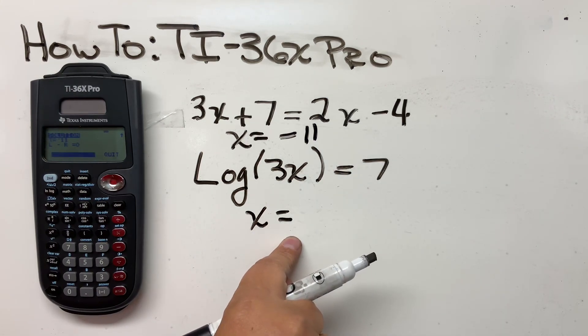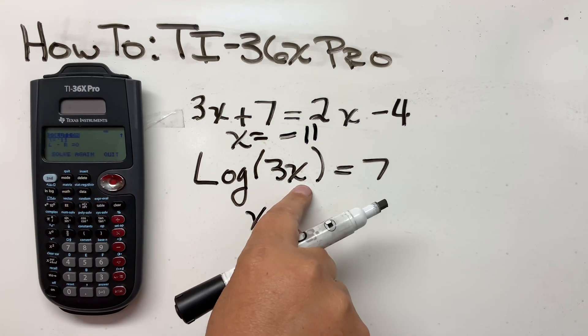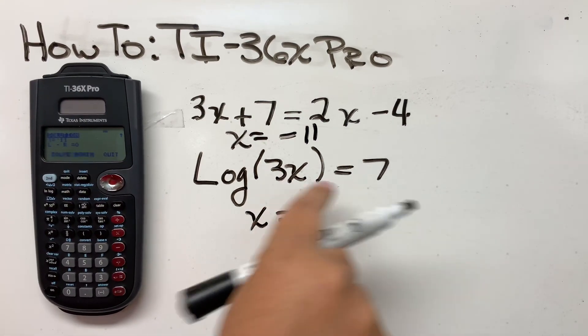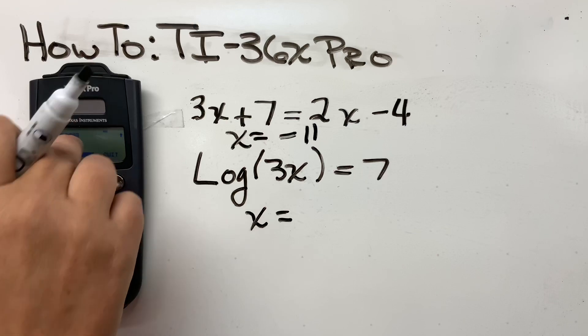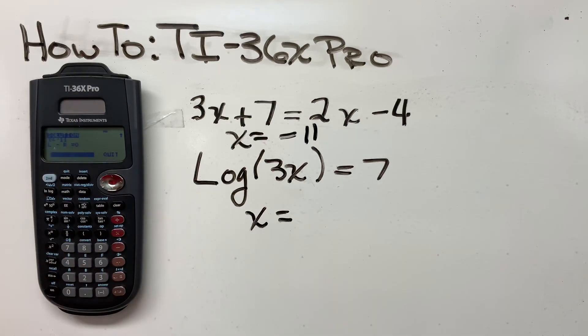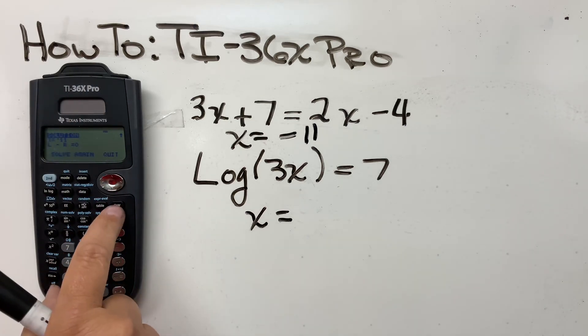The last one here is log of 3X, the quantity 3X, equals seven. So we're going to clear this out because it does store the last equation in memory. So the easy way to clear that, there's three ways to do that.